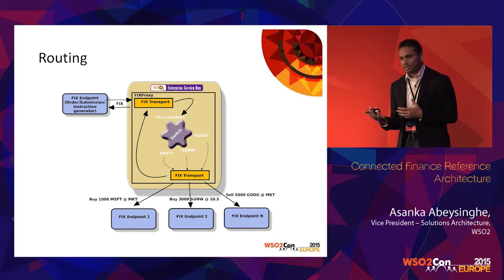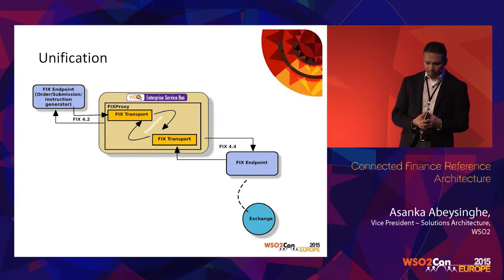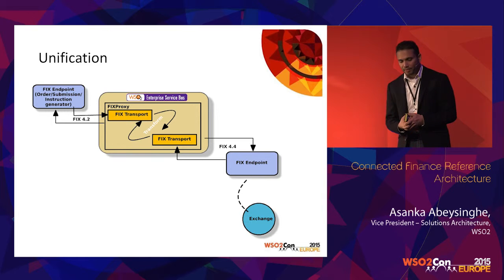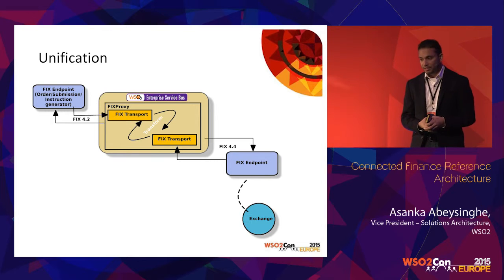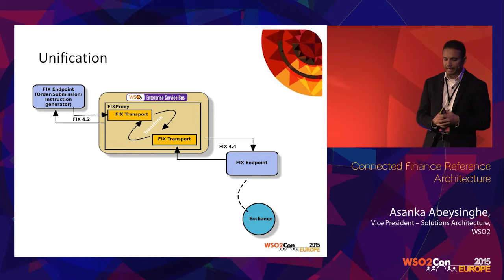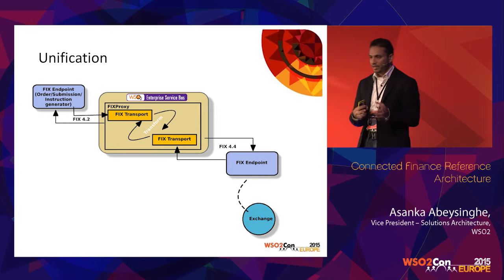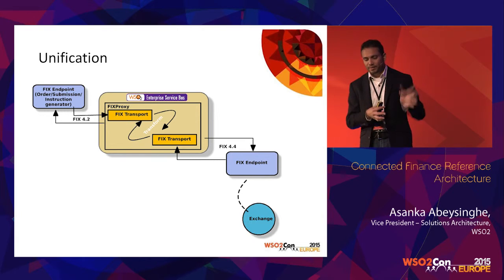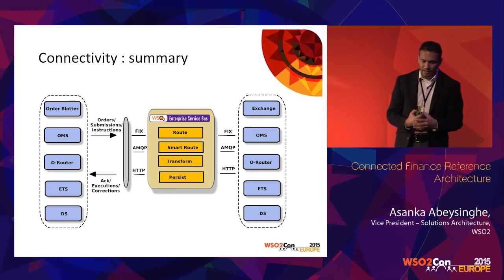You can have static or dynamic routing rules using different rule sets in the integration layer. For unification, you might communicate using one financial protocol version while internally using another. You can bridge different protocol versions using mediation — it is very helpful to maintain a unified internal protocol and plug in different external versions for communication.